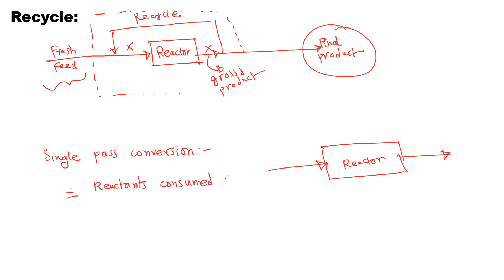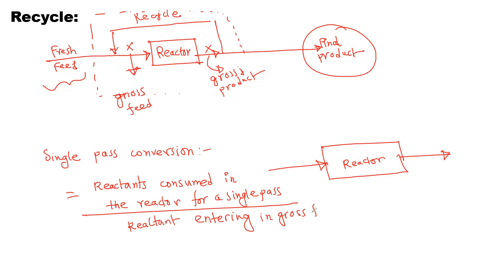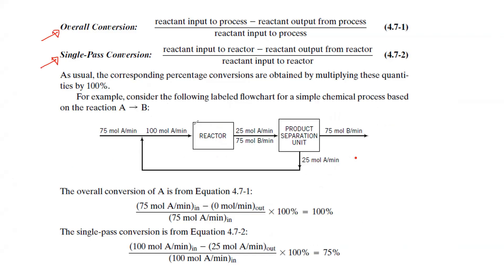Single-pass conversion is reactants consumed in the reactor for a single pass divided by reactants entering in the gross feed. Overall conversion versus single-pass conversion — the overall conversion is of course the total.